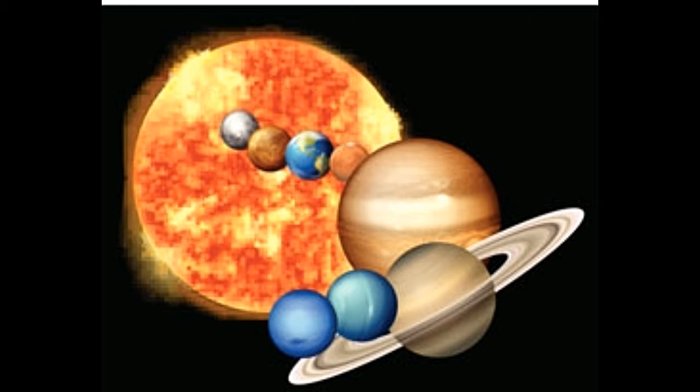Planets in our solar system. The Sun is the center of our solar system and has 8 planets orbiting it. These include starting from the nearest to the Sun: Mercury, Venus, Earth, Mars, Jupiter, Saturn, Uranus, and Neptune.